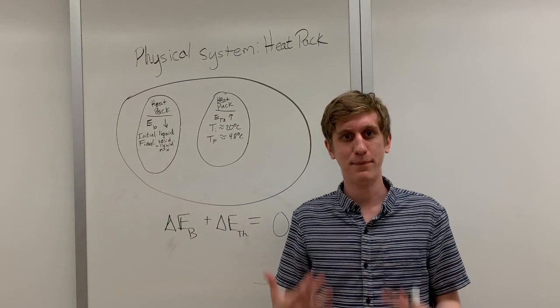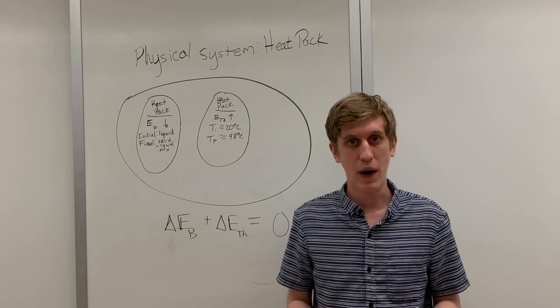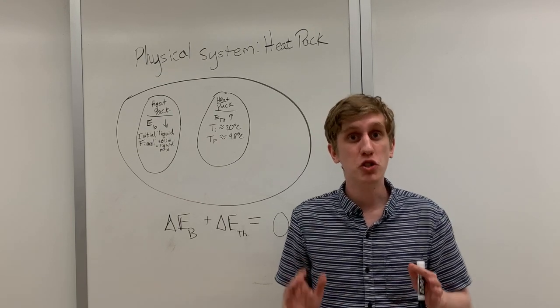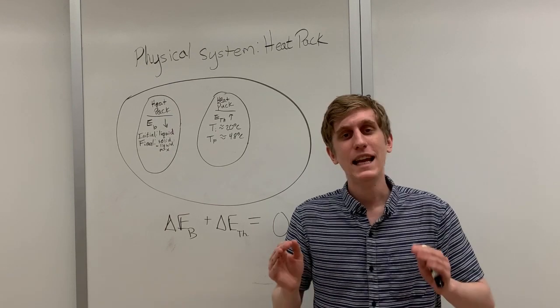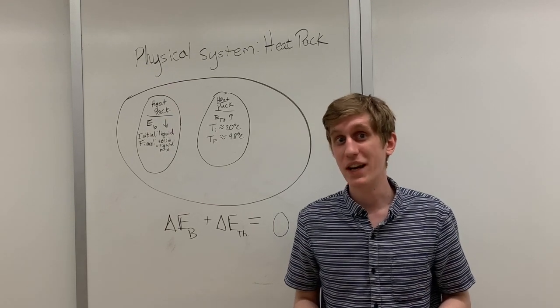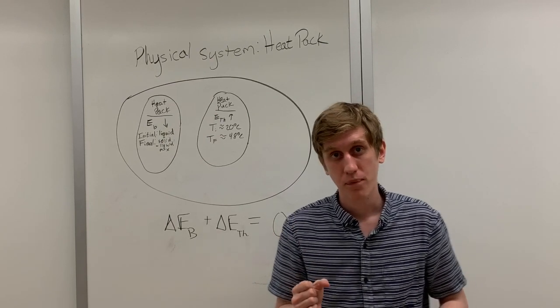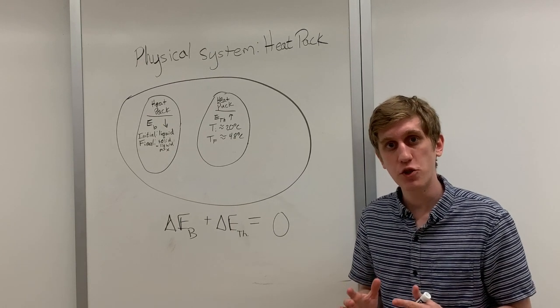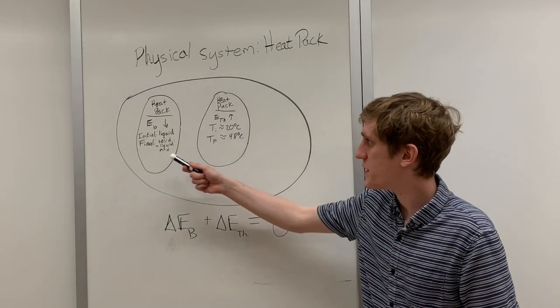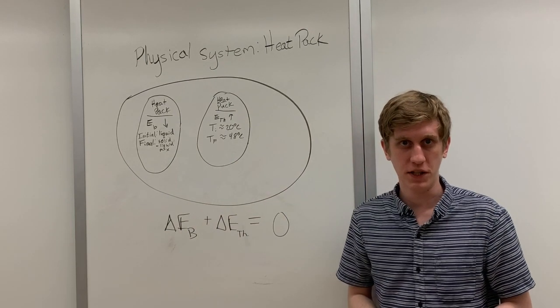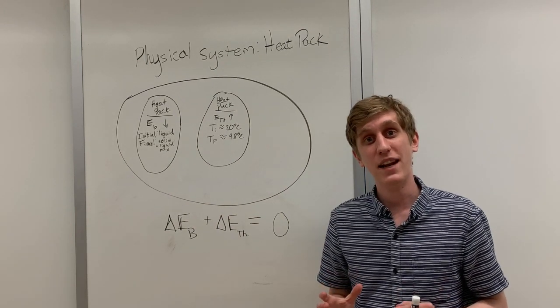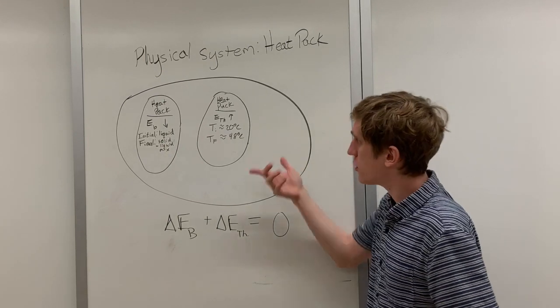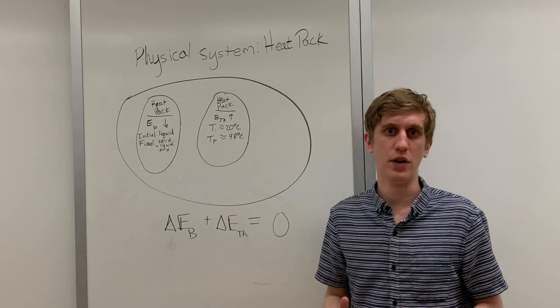So this is our complete explanation for why the heat pack behaves the way it does. For some reason the substance in the heat pack likes to super cool below its freezing point. It remains a super cooled liquid indefinitely until we click the clicker. When we click the clicker the heat pack instantly undergoes its phase change transferring energy from its bond energy system into its thermal energy system. Because the bond energy is decreasing the liquid turns to a solid and because the thermal energy is increasing its temperature increases.